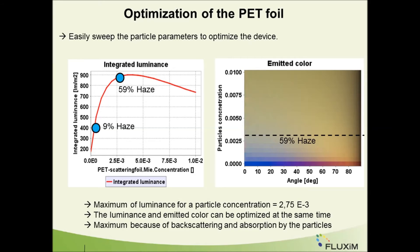In the previous example we were optimizing the thin film layer stack of the OLED, but it is also possible to optimize the scattering layer to maximize efficiency. Here, we swept the concentration of scattering particles in the PAT foil to maximize device efficiency. The efficiency of the device strongly increases with particle concentration at low concentration, until a maximum which almost corresponds to the 59% AZ-PAT foil. For higher concentrations, the efficiency starts to decrease because of increased backscattering and absorption in the particles. The figure on the right shows the emitted color of the OLED versus angle and particle concentration, revealing the strong color variation already discussed.